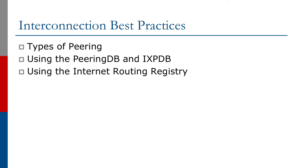We're now going to take a look at interconnection best practices. While this is not directly about BGP configuration, there's a lot here that's actually very significant when considering how to operate BGP and how to configure BGP when talking with neighboring network operators. For the interconnection best practices we're going to look at the types of peering, the use of the PeeringDB and the IXPDB, and the use of the Internet Routing Registry.